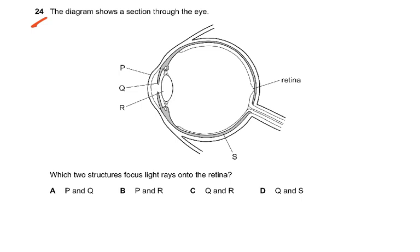Question 24. The diagram shows a section through the eye. Which two structures focus light rays on the retina? We know it's definitely the lens, so it has to be R. Now is it P or Q? Q is the iris — that has nothing to do with focusing. So it has to be P and R, and the answer is B. P is the cornea, which works like a lens and refracts light, because as soon as light enters it touches the aqueous humor. So it had to be P and R.